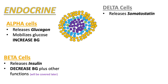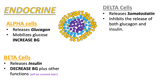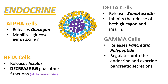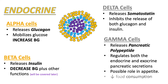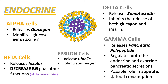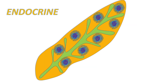Somatostatin is also released from the hypothalamus, the stomach, and the intestines. It acts as an inhibiting hormone — the pancreatic somatostatin inhibits the release of both glucagon and insulin. The gamma cells release a hormone called pancreatic polypeptide, which regulates both endocrine and exocrine functions and may have a possible role in appetite by helping to decrease food consumption. The epsilon cells release a hormone called ghrelin, which stimulates hunger — the opposite effect of pancreatic polypeptide.